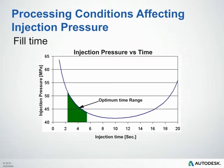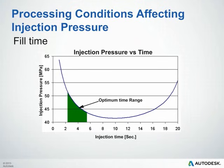Here's a good example of how processing conditions affect injection pressure. In a study of injection pressure versus injection time, starting at around 20 seconds the pressures are very high. As we inject faster, we're shearing the material and decreasing viscosity — until we're filling so fast that we're no longer leveraging that effect. We want to keep cycles to a minimum, staying in the green zone on that chart without exceeding the shear stresses and shear rates for our material.